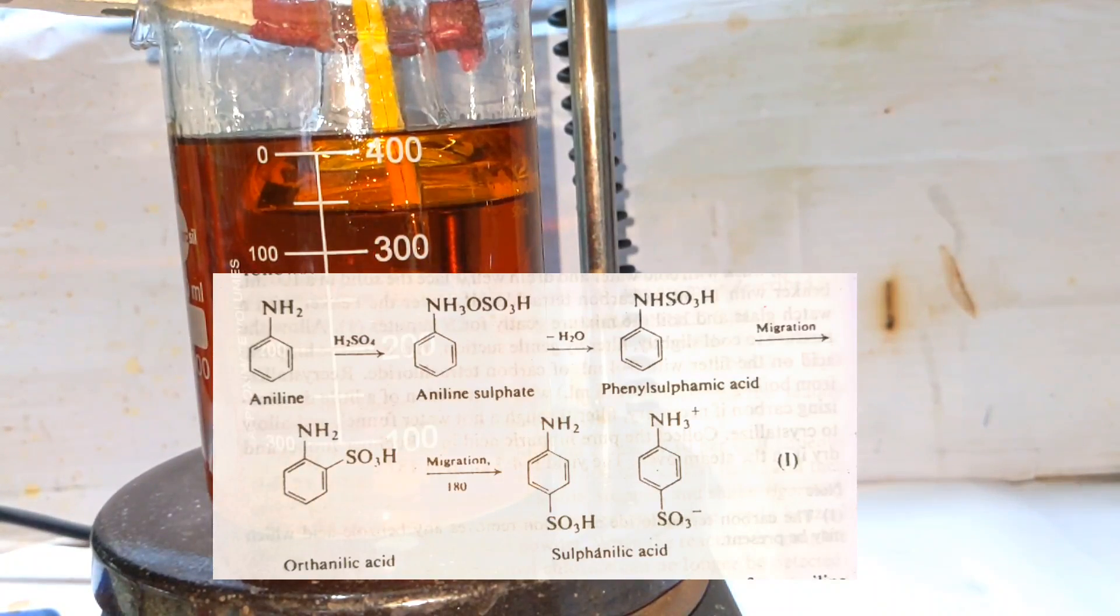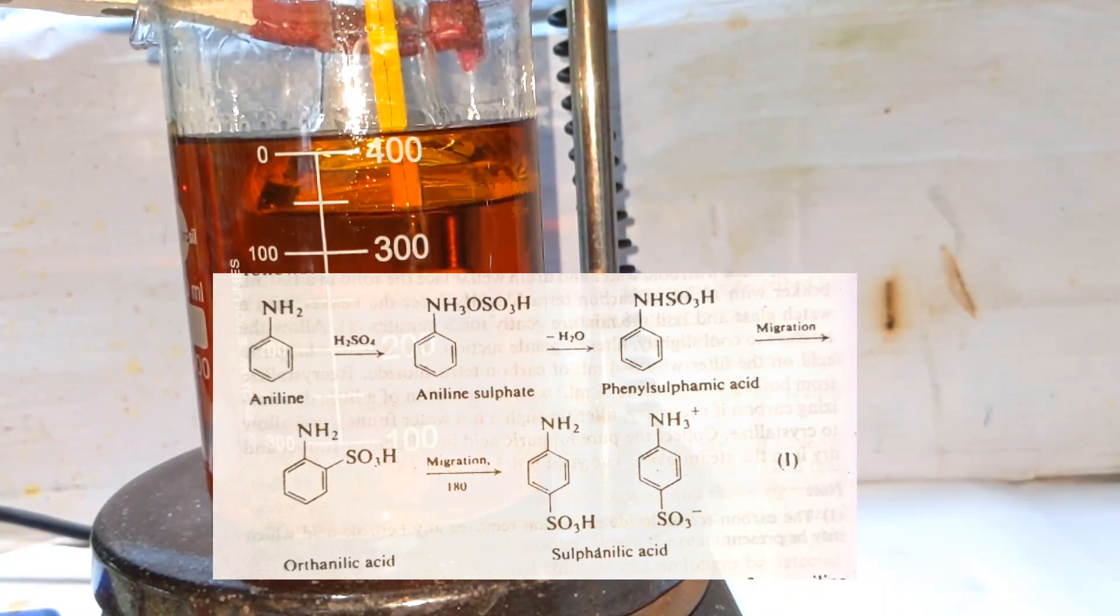Then there is initial loss of water from the aniline monosulfate because of the dehydrating action of sulfuric acid, with the formation of phenyl sulfamic acid. Then on gentle heating, the sulfonic acid group migrates from the ortho position to give orthanilic acid.